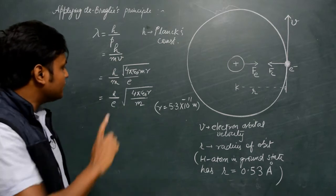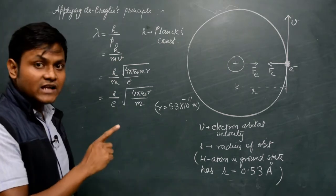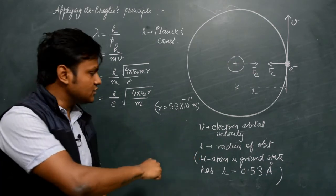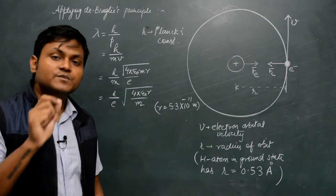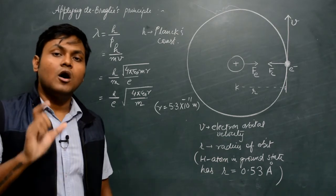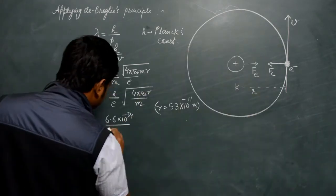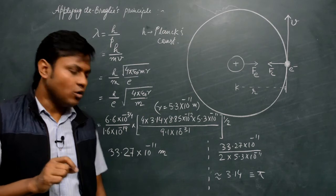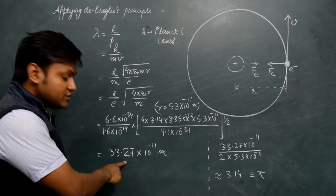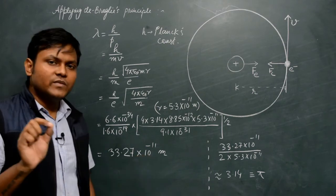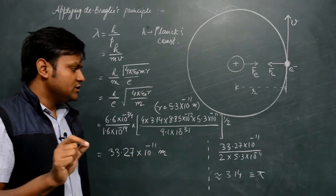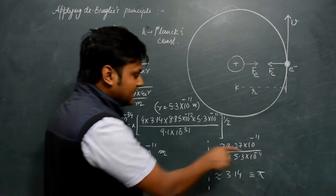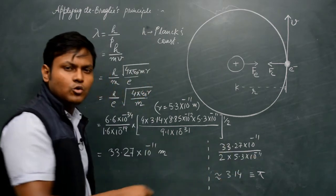We have obtained an expression for the wavelength of this electron as it goes around the nucleus, and most of the terms are constants. For the hydrogen atom in its ground state, the orbit radius is around 0.53 angstroms, which is 5.3 × 10⁻¹¹ meters. Substituting all the values of the constants, I obtain a number which is 33.27 × 10⁻¹¹ meters. There is something very special about this number — dividing it by 2 multiplied by 5.3 × 10⁻¹¹ gives a number close to 3.14, which is nothing but pi.